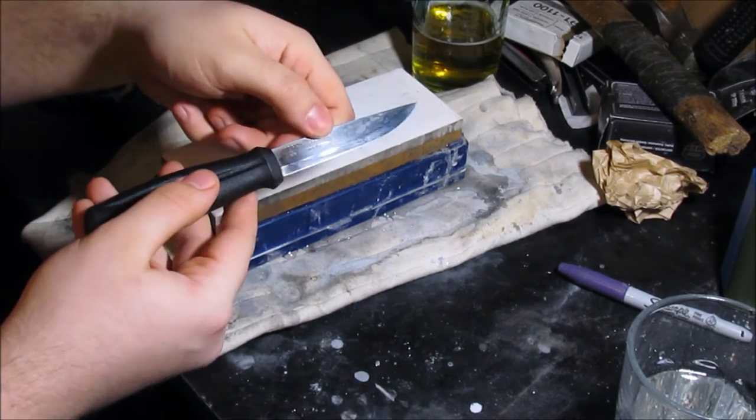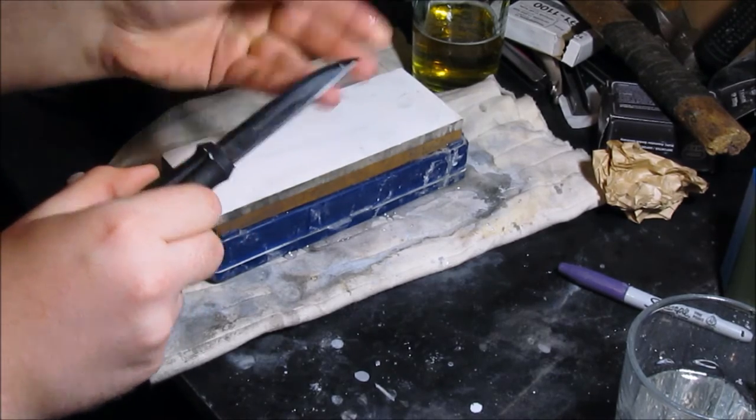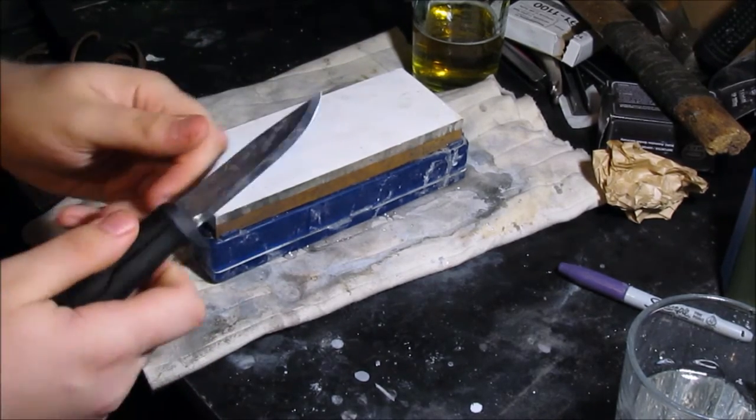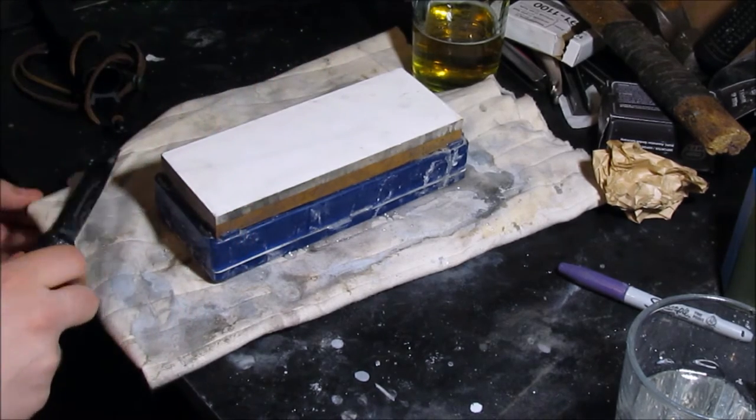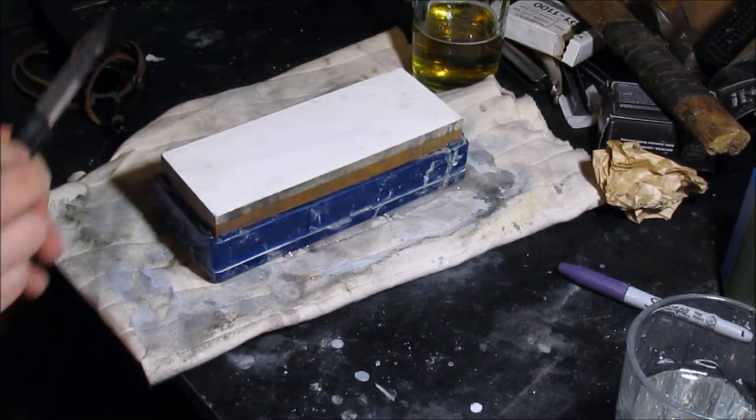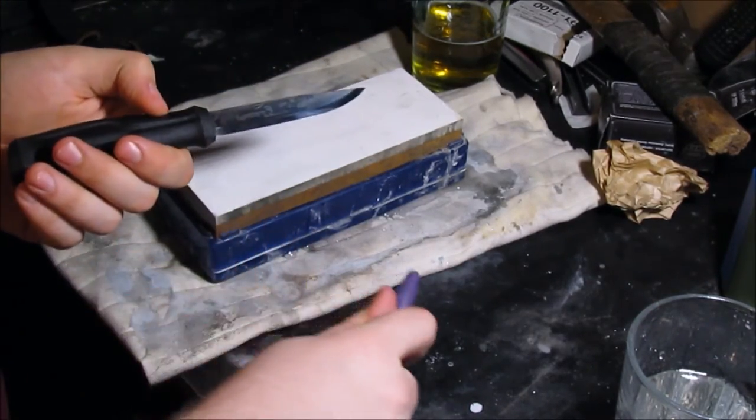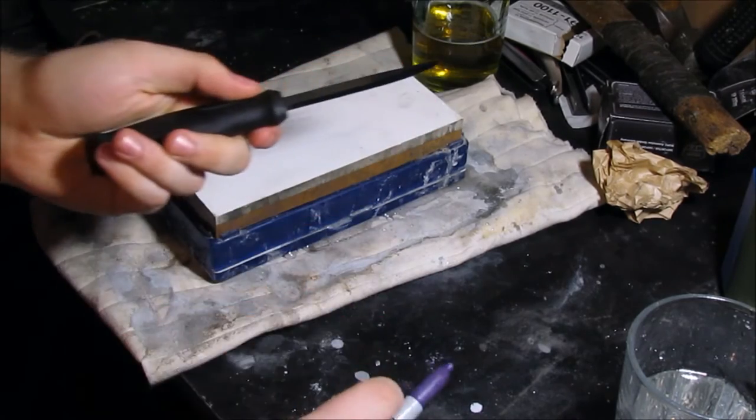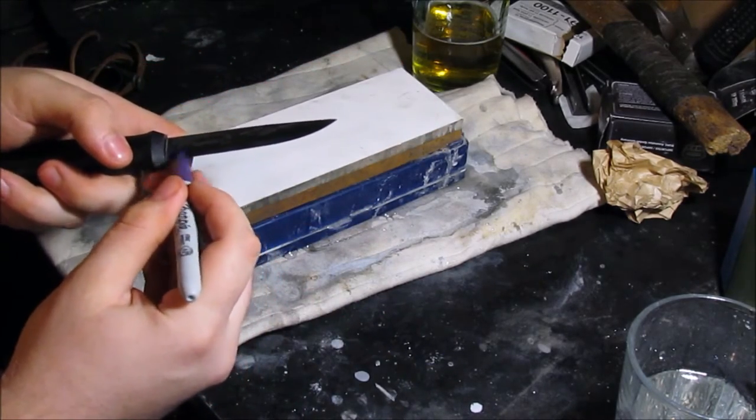So with this knife here, the trick I like to use for sharpening almost any knife, but it's particularly useful on a Scandi, is to get yourself a good quality permanent marker. I have this purple Sharpie here, and actually draw, fill in the bevel you want to sharpen.